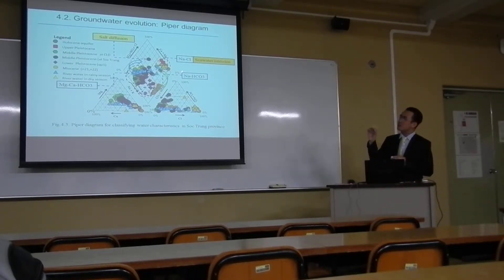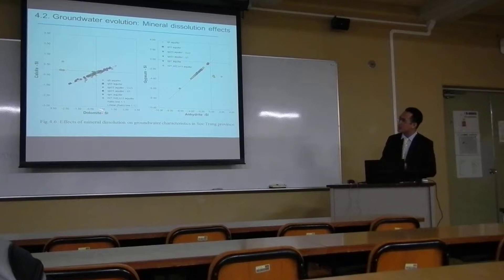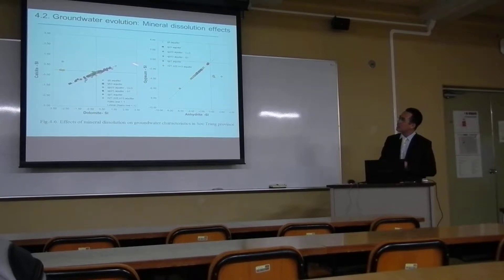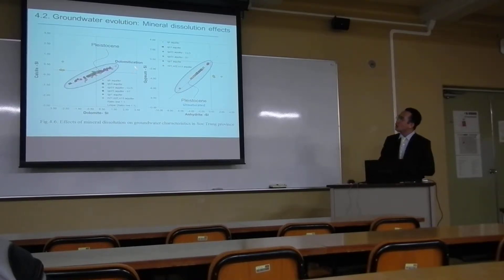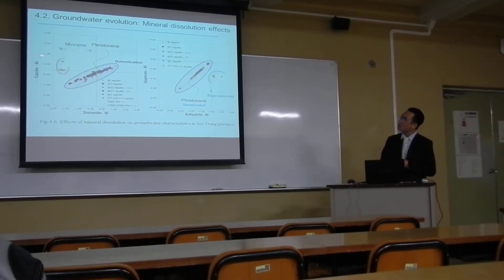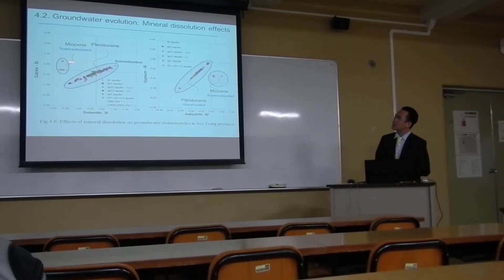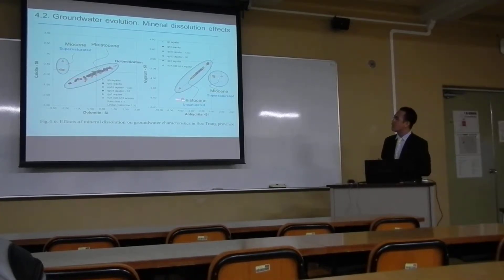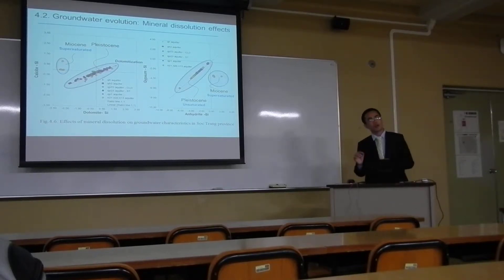The question here is: which is the main factor affecting groundwater quality in this location? To make this clear, I calculated the saturation index to understand the mineral dissolution effect. We can see that almost all groundwater in this location is entering into dolomite dissolution. Some deeper aquifers are strongly affected by calcite and anhydrite dissolution, indicating the supersaturation of calcite and anhydrite rock dissolution. Another thing we should consider is that, unlike other regions in the world, the coastal areas seem to be strongly affected by seawater intrusion.